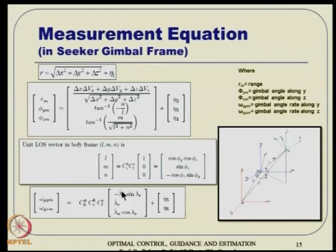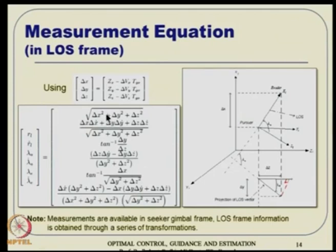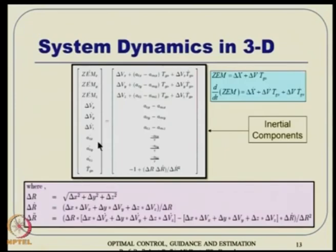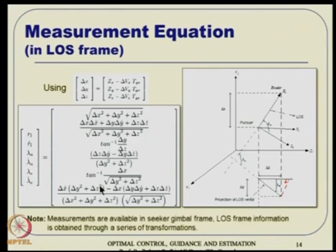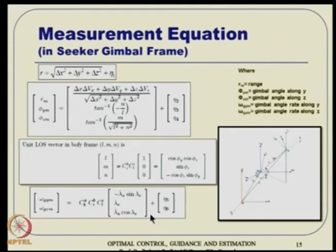These LOS components are computed from the state vector since delta-X can be recovered as ZM minus delta-V times Tgo. Delta-X, delta-Y, delta-Z are first computed that way, then used to derive lambda-E-dot and lambda-A-dot. The measurements are typically available in the seeker gimbal frame, and LOS frame information is obtained through a series of transformations. Range is corrupted by noise, as are range rate and gimbal angles.